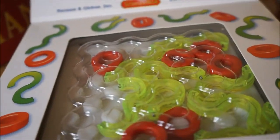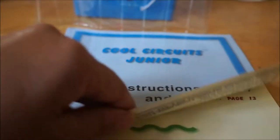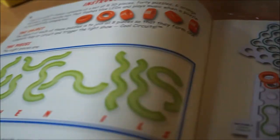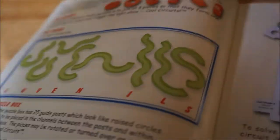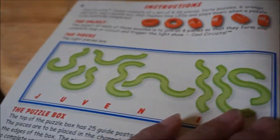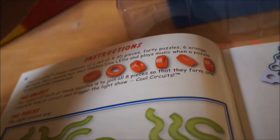Okay, so let's see what's in the box. Inside the box, instructions and solutions. So they give you a number of objects. Join all eight pieces so that they form a complete loop of circuit and trigger the light show.